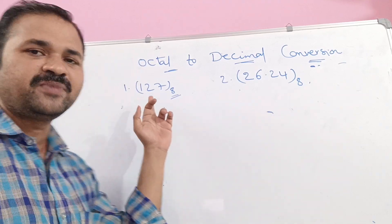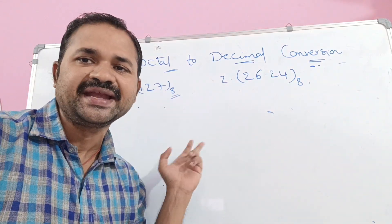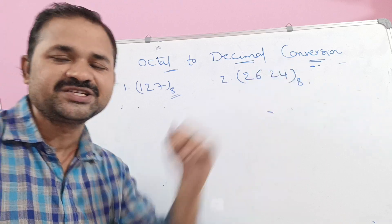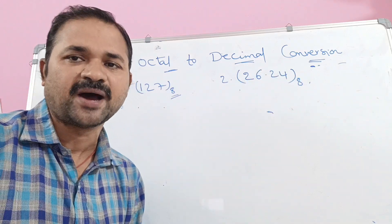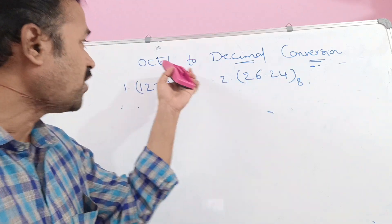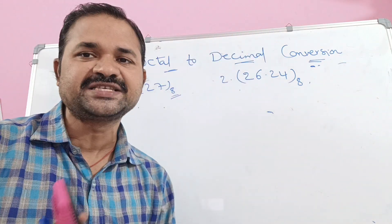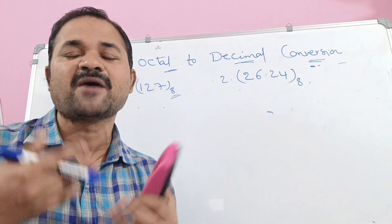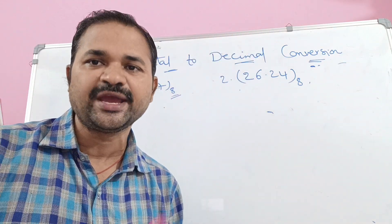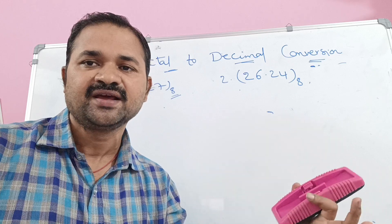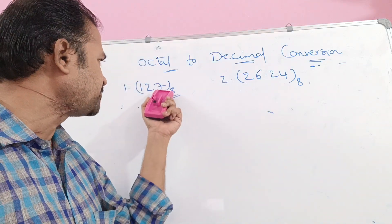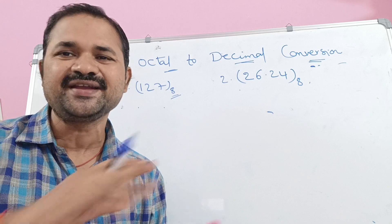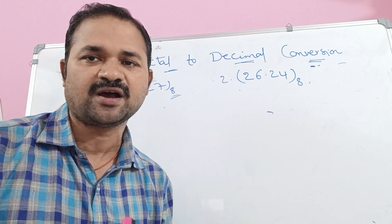The first number contains only an integer part, whereas the second number contains an integer part as well as a fractional part. To convert octal to decimal, we have to write powers of 8 — 8 power 0, 8 power 1 — and multiply the corresponding digit with the powers of 8, then add the corresponding terms.